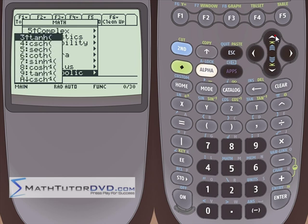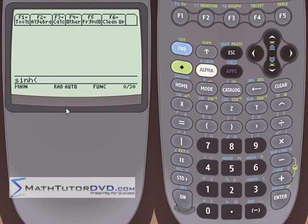So basically you use these functions just like you would use any other function. If you want to do the hyperbolic sine of a number, just put it on the stack, stick a number in the parentheses and hit enter, and it'll go off and evaluate that and give it back to you.